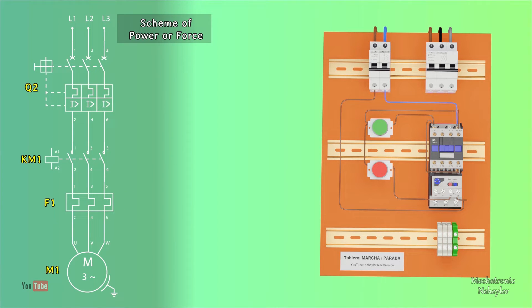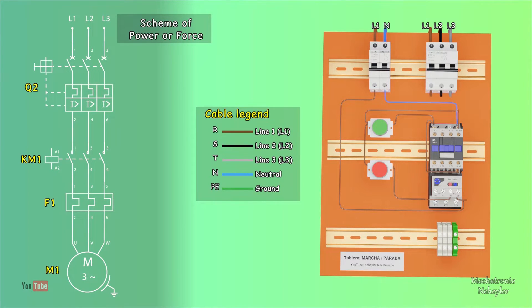Wiring for the power circuit is relatively easier, at least for this board. Since, from the main power, it takes the three line cables and connects to the inputs of the main contacts of the contactor.